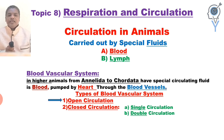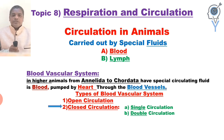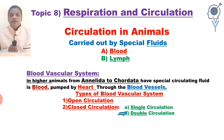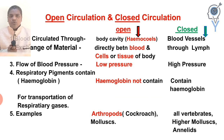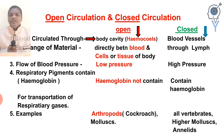There are two circulatory systems — open and closed. In closed circulation, blood circulates through blood vessels. In open circulation, blood circulates through the haemocoel, which is the body cavity.